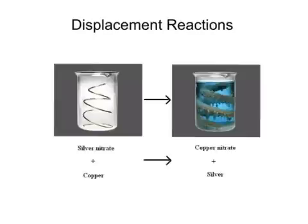If you place a coil of copper wire in a solution of silver nitrate and leave it for a while, a few things happen. First of all, the copper wire becomes covered in silvery black crystals. The solution, originally colourless, turns blue. What's happening here is a displacement reaction. The silver nitrate and the copper have changed into silver, which forms as crystals, and copper nitrate — the blue solution.